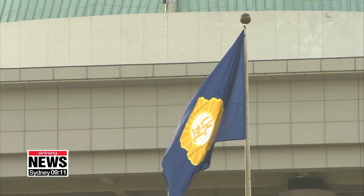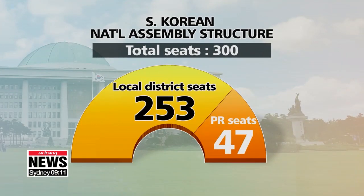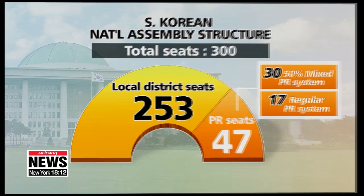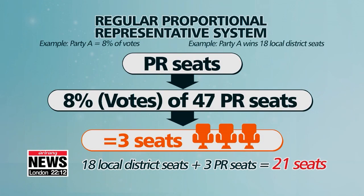South Korea's parliament consists of 300 seats. 253 are elected through local constituencies, while the remaining 47 are chosen through proportional representation. As per the electoral reform bill passed in late December, which introduces a 50% mixed-member proportional representation system, the way in which these 47 PR seats will be distributed has been altered.